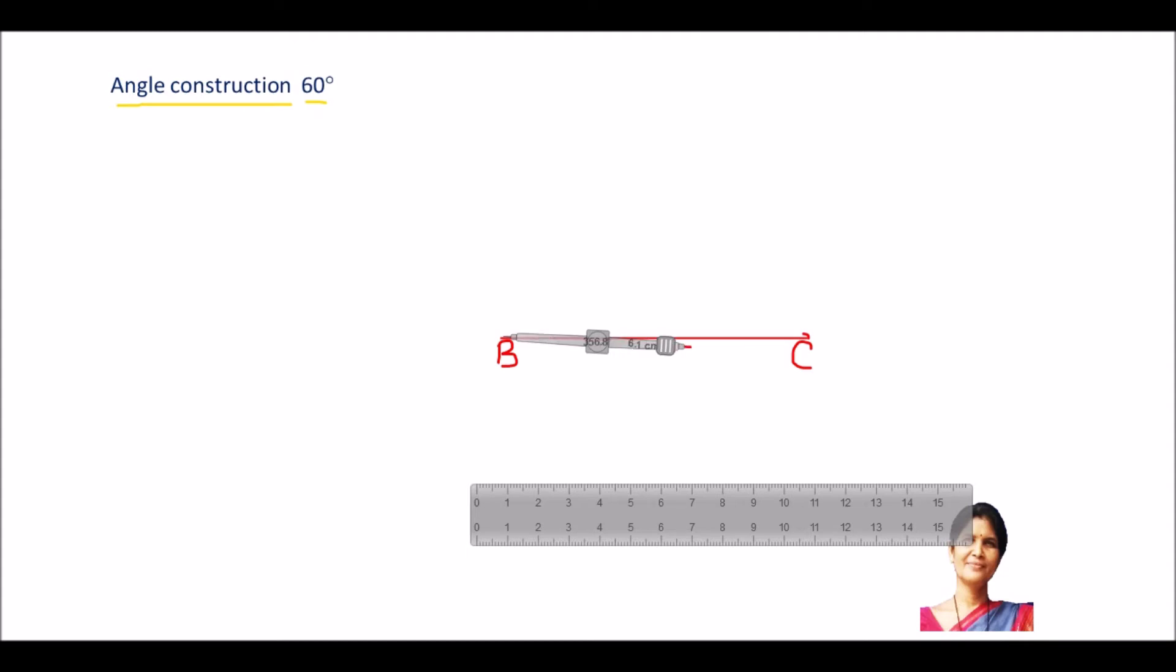You can take radius this much, you can take radius small, you can take radius much bigger, but don't take very big. And draw the arc now to intersect this BC. Or you can start from BC point also, no problem.